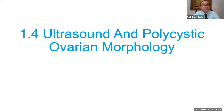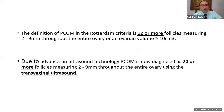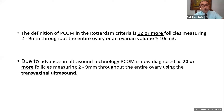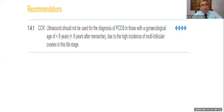Regarding ultrasound: it was not present in previous classifications but was added by the Rotterdam classification. In the original Rotterdam they said 12 or more follicles, but now due to advances in ultrasound technology, we are talking about 20 follicles per ovary measuring from 2 to 9 millimeters. We should use transvaginal ultrasound. If you have a virgin patient and are using abdominal ultrasound, you will depend on ovarian volume, not on counting follicles. You can never depend on the ultrasound in the first eight gynecological years after menarche.